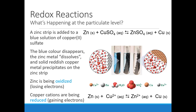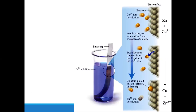So if electrons are easily transferred from zinc to copper, do you think we could use that to generate electricity? Because electricity is a movement of charge — often thought of as a movement of electrons. When you plug something in, electrons are flowing through a wire. We know zinc wants to give its electrons to copper. Couldn't we use those electrons that are being moved from zinc to copper to light a light bulb or something? That's the idea here.